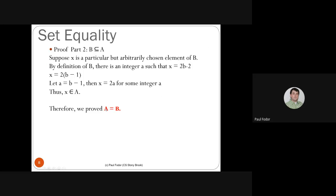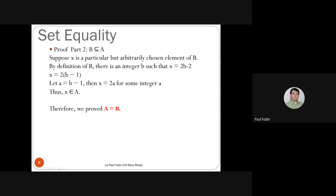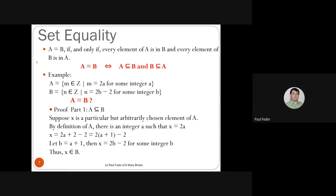Second part: prove B ⊆ A. Suppose x is an arbitrary element of B, so x = 2b-2. Factoring out 2 gives x = 2(b-1). Letting a = b-1 (an integer), we get x = 2a, which is the form of elements in A. Therefore x ∈ A, so B ⊆ A. Since A ⊆ B and B ⊆ A, we conclude A = B.